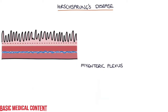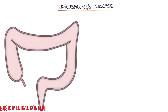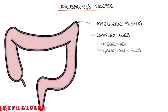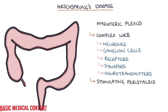The myenteric plexus, which is also known as Auerbach's plexus, forms the enteric nervous system — it's the brain of the gut. This nerve plexus runs all the way along the bowel wall and is a complex web of neurons, ganglion cells, receptors, synapses, and neurotransmitters. It's responsible for stimulating peristalsis of the large bowel.